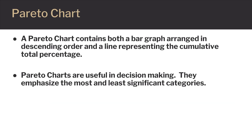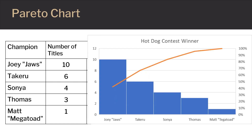Next, let's look at a Pareto chart. This chart contains both a bar graph arranged in descending order based upon frequency, and a line representing the cumulative total percentage. Pareto charts are useful because they help us with decision making — they emphasize the most and least significant categories. Here we have a bar graph showing how many times each competitor has won the hot dog eating contest. Their names are across the bottom, and the height of each bar represents how many times they've won. You can quickly look at the graph and see that Joey has won the contest more times than any other competitor.